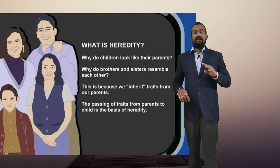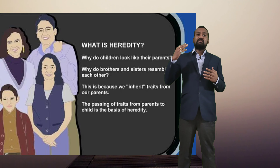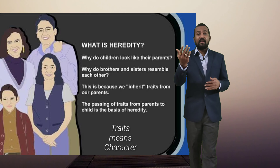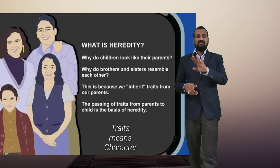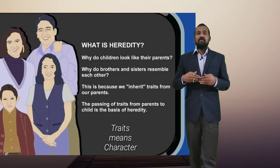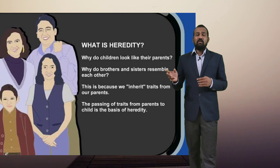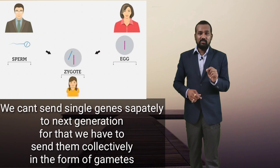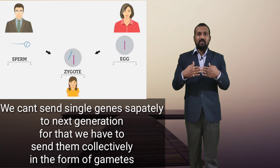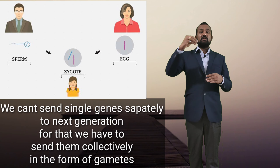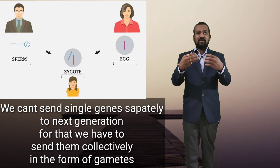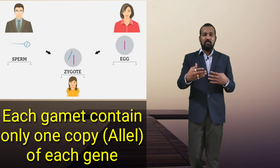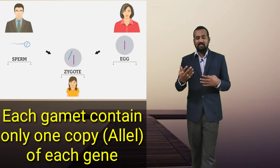The concept of heredity includes the transmission of characters from one generation to the next generation with the help of genes — by sending genes from one generation to the next, we are sending the character from one generation to the next. An organism cannot send a single gene directly; for that the organism needs to have sexual reproduction, in which gametes of male and female come together, get united, and form a zygote. This zygote results in the new generation. The gametes carry the genes, so that is how genes are transmitted from one generation to the next — that is heredity.